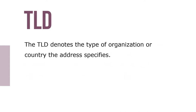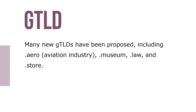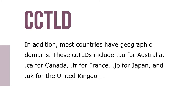The TLD denotes the type of organization or country the address specifies. Many new gTLDs have been proposed including .aero for the aviation industry, .museum, .law, and .store. In addition, most countries have geographic domains. These ccTLDs include .au for Australia, .ca for Canada, .fr for France, .jp for Japan, and .uk for the United Kingdom.